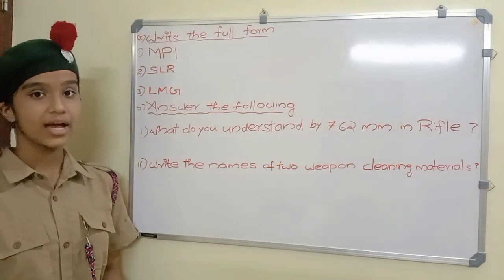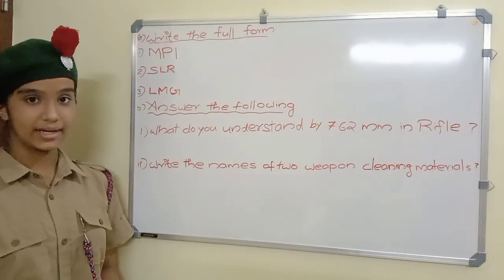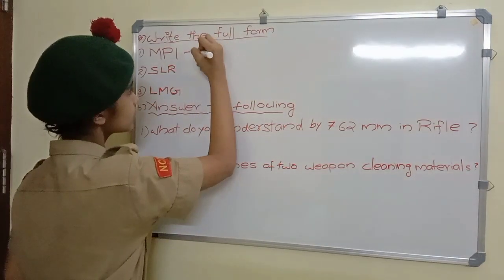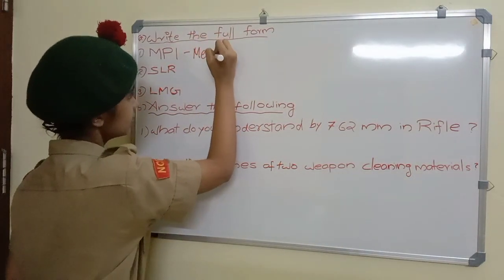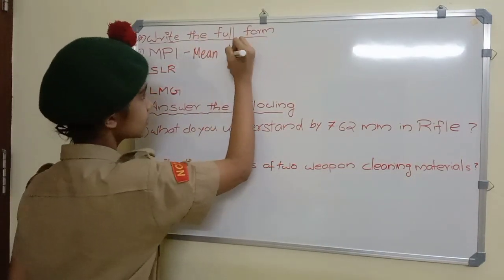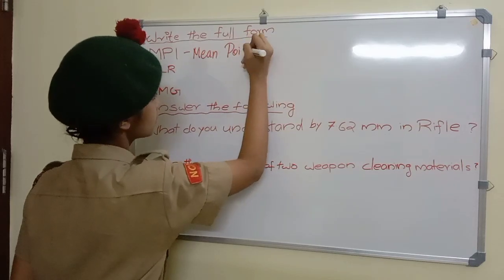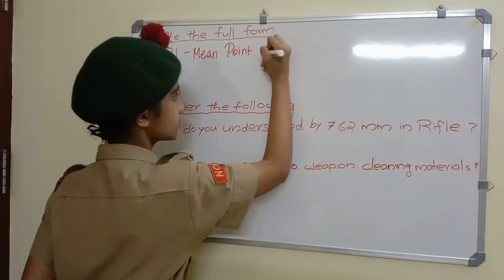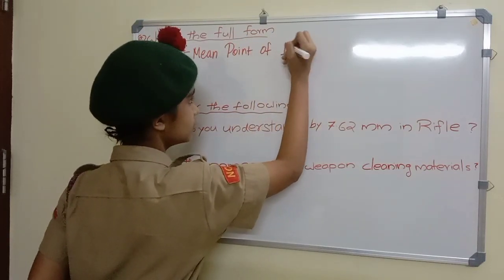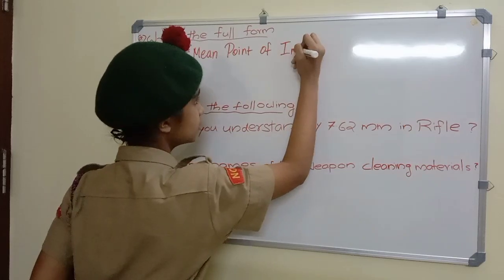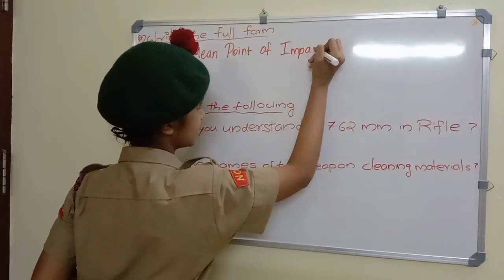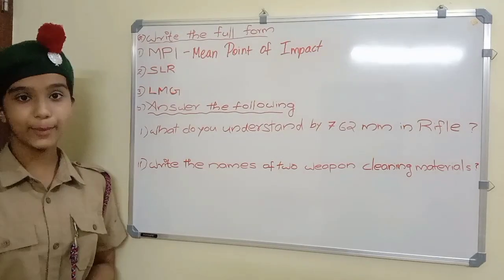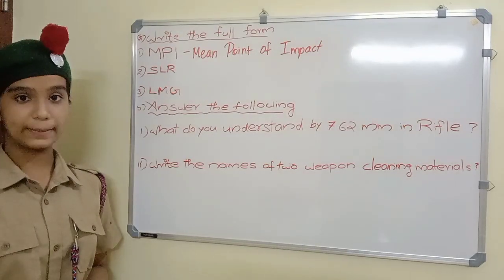Write the full form of MPI. MPI — full form: Mean Point of Impact.